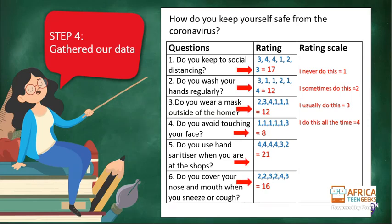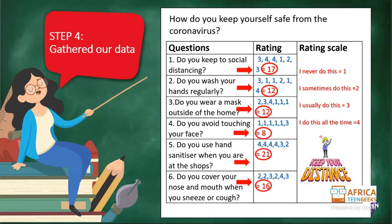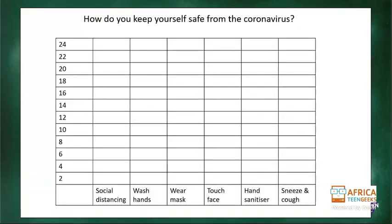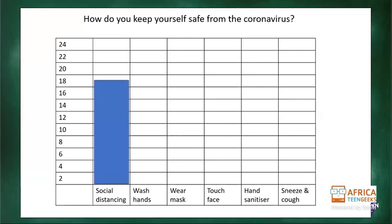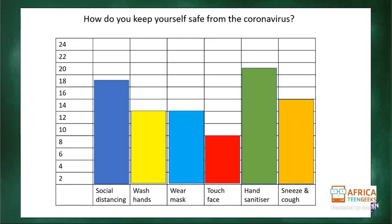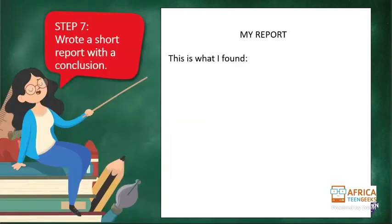After gathering the data, you add up the marks. Just looking at numbers doesn't tell you much — you need to put them on a bar graph. Put the questions along the bottom and the total possible points up the side, then fill in the answers. Once you have a bar graph, it's much easier to read. You can see immediately that hand sanitizing was the strongest area, while touching the face was the weakest.